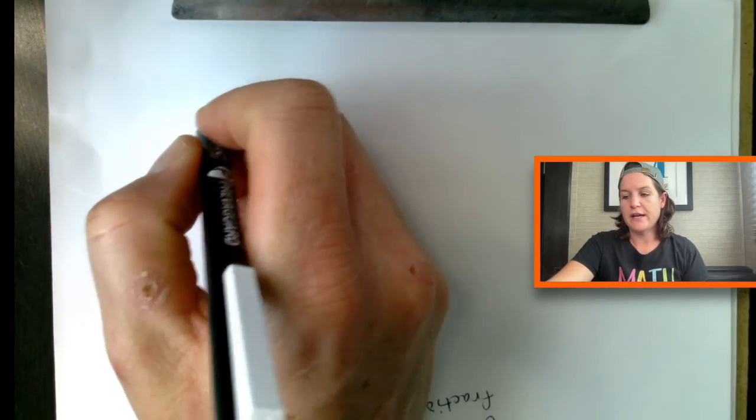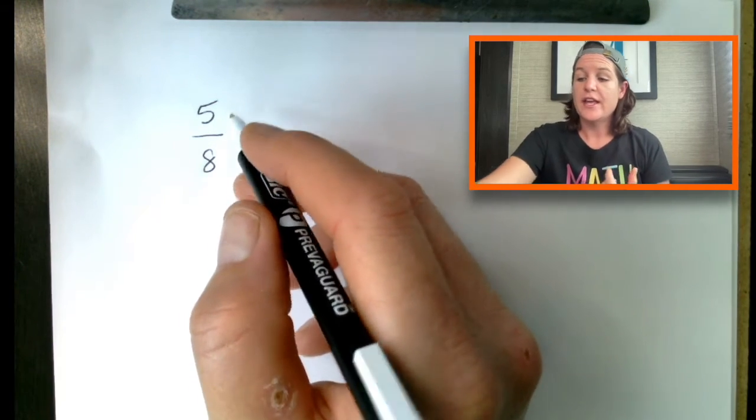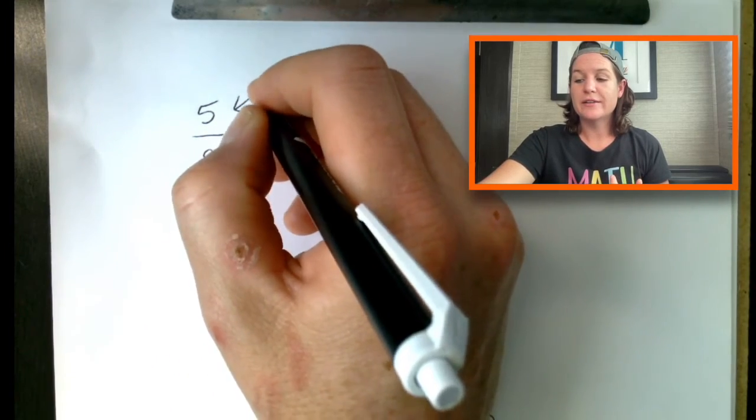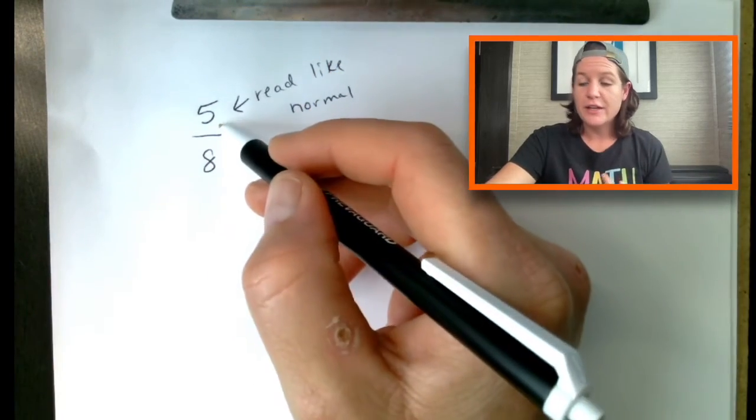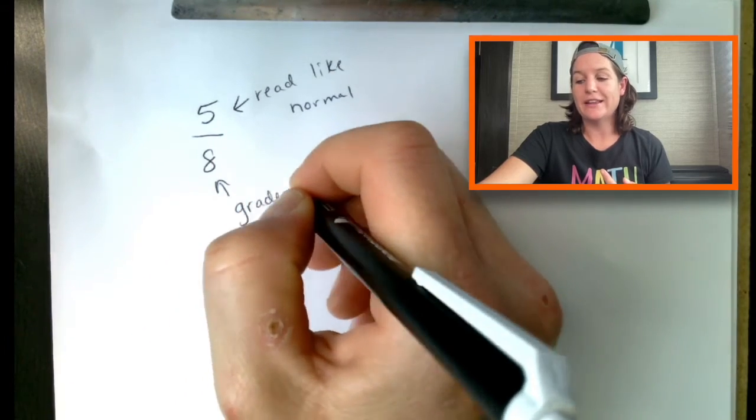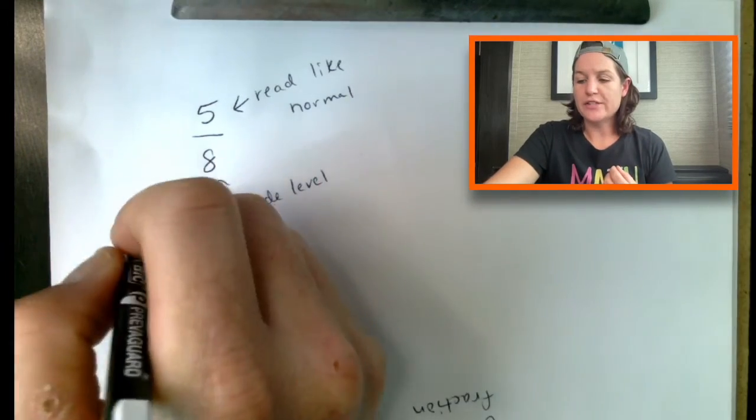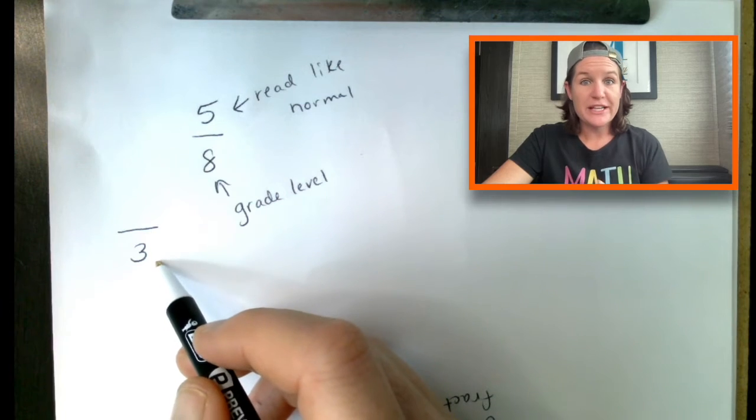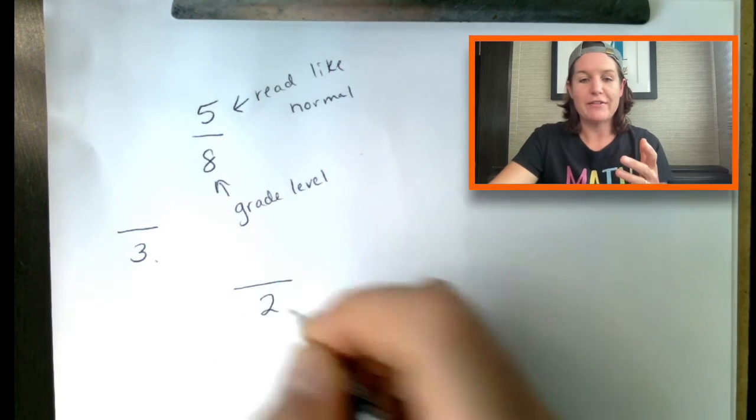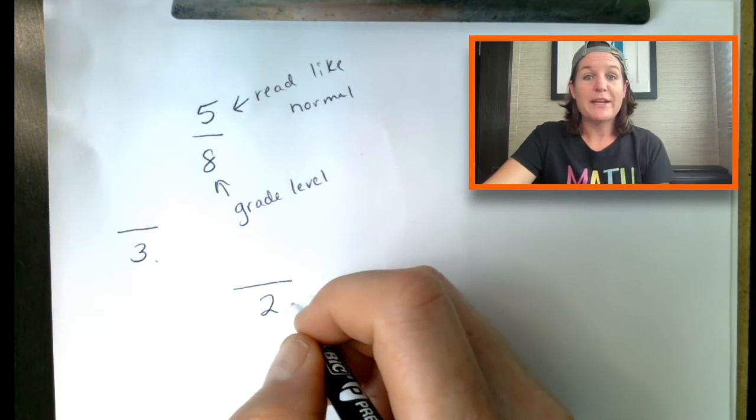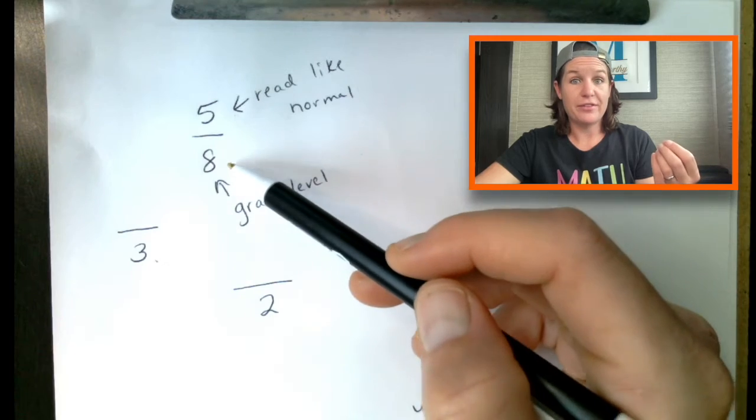Great. Let's go ahead and take a look at another fraction. All right. This time, let's take the fraction five eighths. Oh, I forgot to mention that I have a strategy for how to read fractions. And that is in the numerator, you read it like normal. So this number right here is five. And the denominator, you read it as the grade level. So you are, if you are in grade eight, you're in eighth grade. We would read it like normal. We've got five eighths, five eighths.